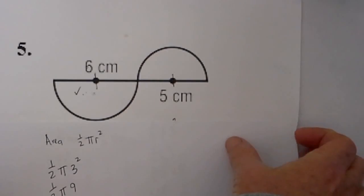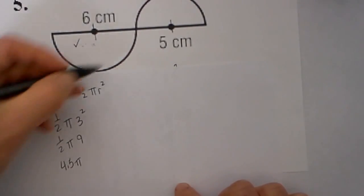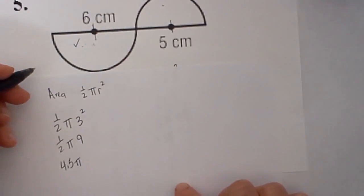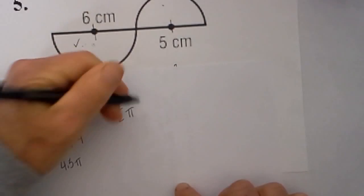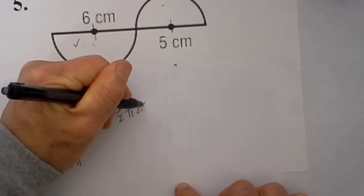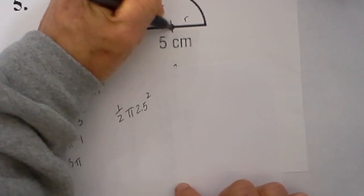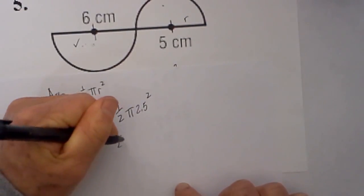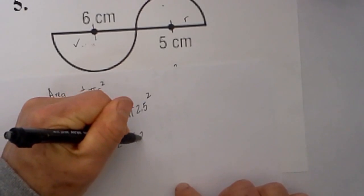Now remember when you are working with pi, pi is an exact answer. If you want to get an estimation, you can multiply it by 3.14 or longer. So we have this one, now we need to get the area of this semicircle. So we will take one-half times pi times 2.5 squared, because this is the diameter and the radius is half the diameter. I will take one-half times pi, and 2.5 squared is equal to 6.25.